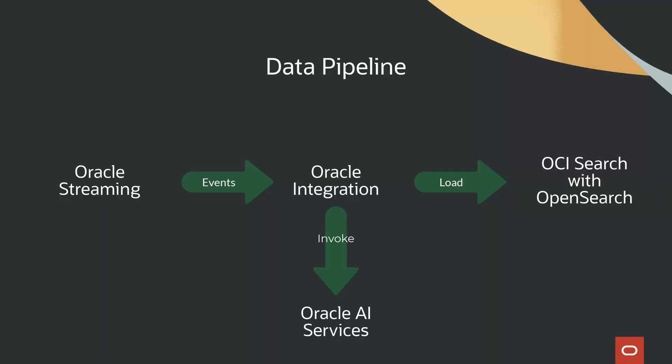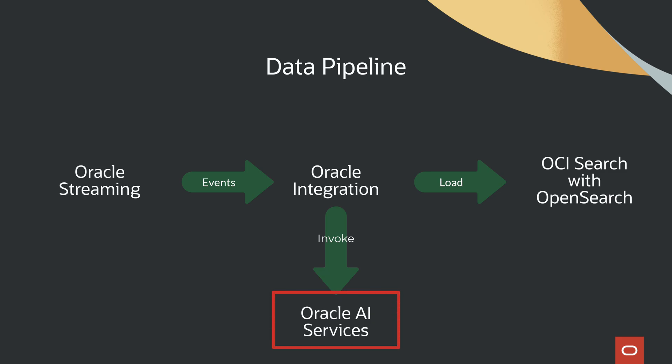Once a file is uploaded, Oracle Streaming picks it up and categorizes it based on the file type. Then Oracle Integration Cloud receives the events based on the file types and invokes integration workflows that utilize various AI services. For example, AI Document Understanding is used for images with text to extract key values.